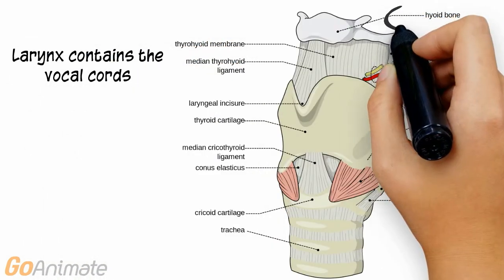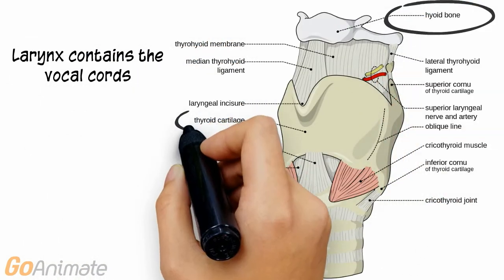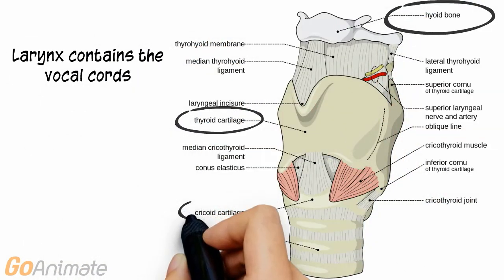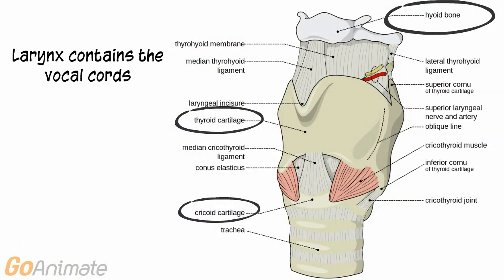The larynx extends below the hyoid bone and contains the large thyroid cartilage, or Adam's apple. Just below the thyroid cartilage is the cricoid cartilage.